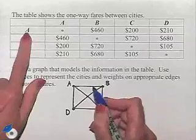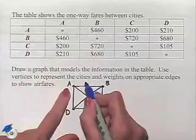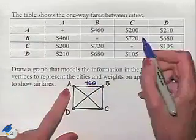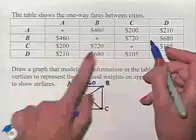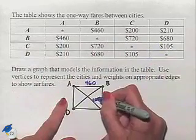So if we're going from A to B, we have 460. So we're going to list on that edge 460. We go from A to C for $200. So we'll list 200 along that edge.